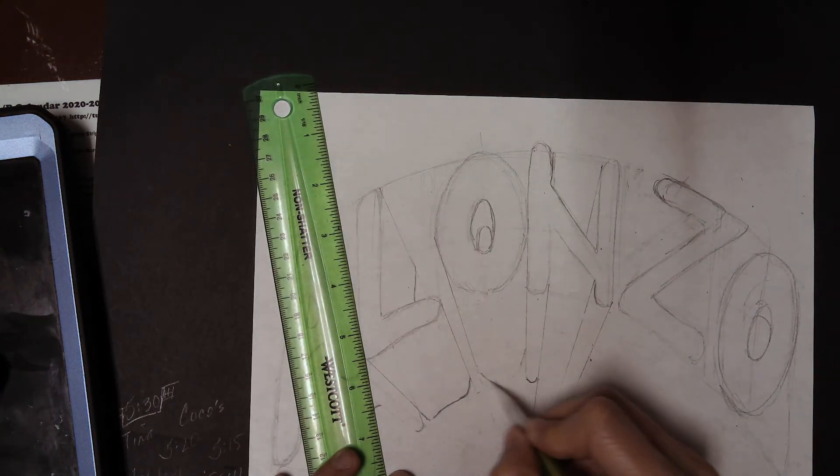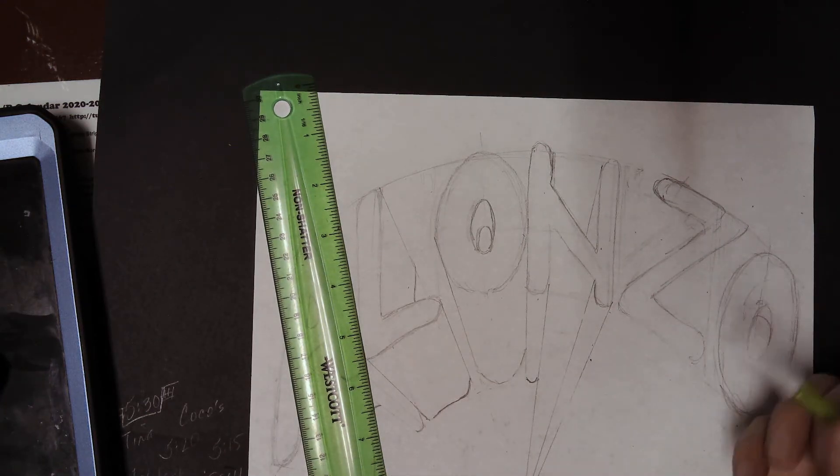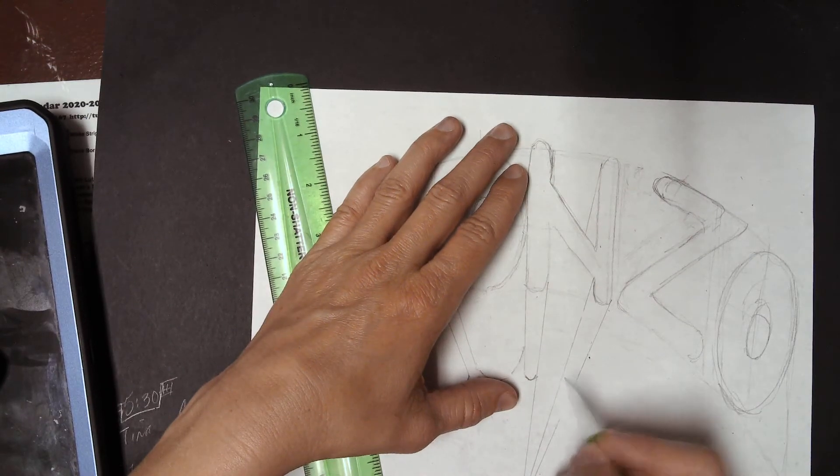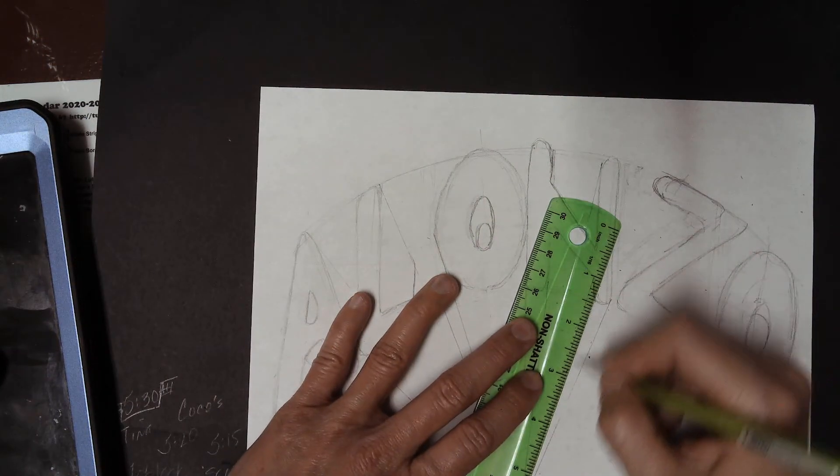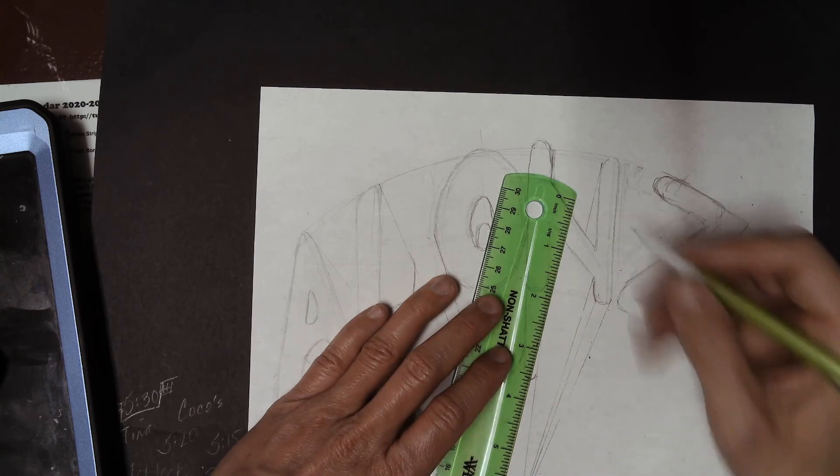That almost looked like shading, so I was going to clean that up for a minute. Okay. We'll go right across and we'll do this part. Now, this, I think I need an extra guideline for because I'm like, okay, it's rounded, but then it goes straight up.